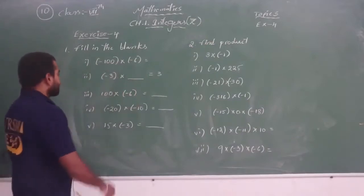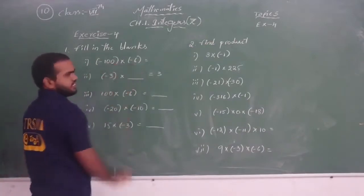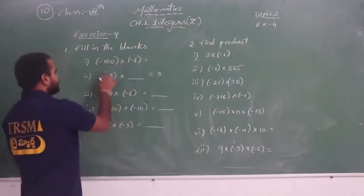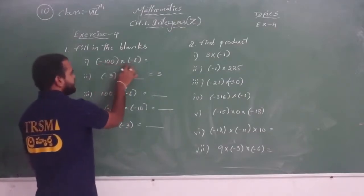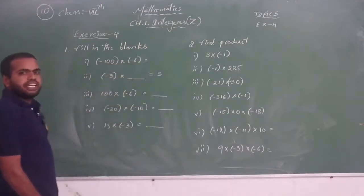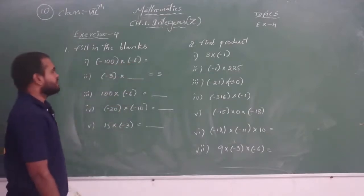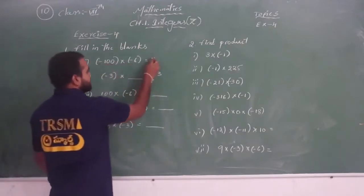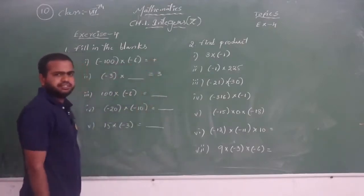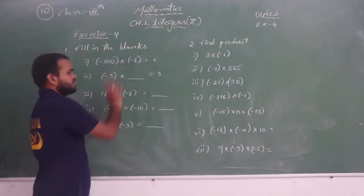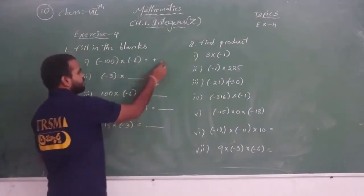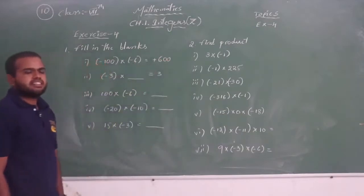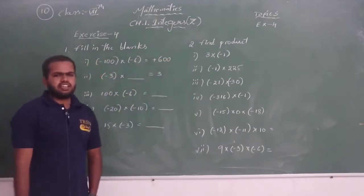See the first question: minus 100 into minus 6. Here, minus into minus — we know the product of two negative integers is a positive integer. So minus into minus gives a plus. 100 into 6 is 600, so the answer is plus 600, or just 600.